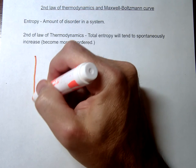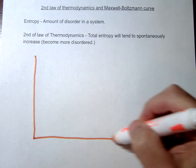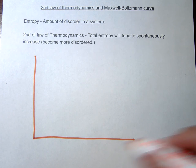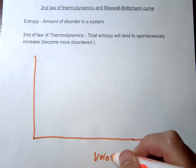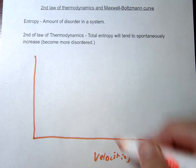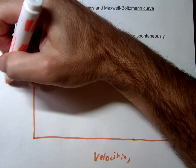So let's see this in action here. Recall your Maxwell-Boltzmann curve is basically just a plot of velocities versus number of particles.